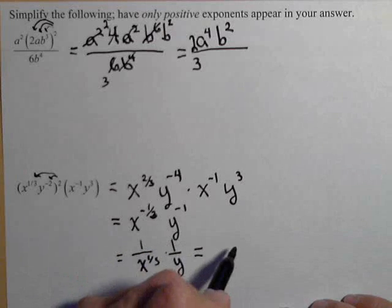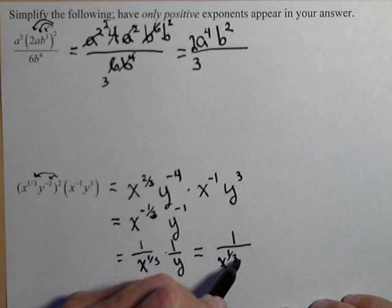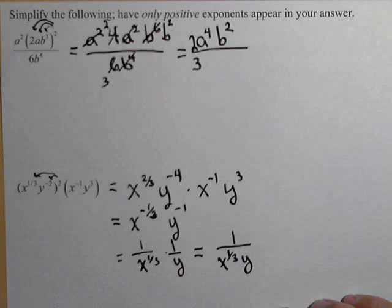We can multiply. Multiplying across, we get one on top, and x to the one-third y on bottom. And now we have no negative exponents.